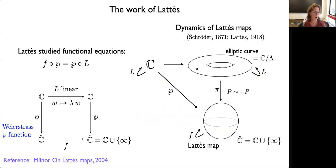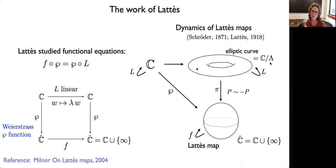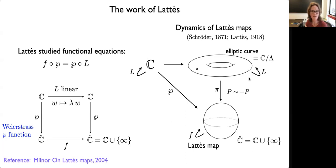Going back to Lattes: he was looking at rational functions on the Riemann sphere which are quotients of a linear transformation. A linear map preserving a lattice on the plane factors through the quotient by that lattice — in particular, the corresponding elliptic curve. So we have an elliptic curve, and we can think of a Lattes map as the quotient of an endomorphism on an elliptic curve, which is linear from the complex plane but can be viewed as a map on the elliptic curve.